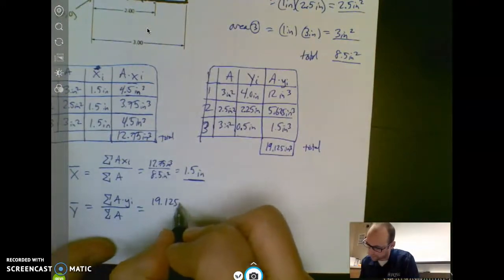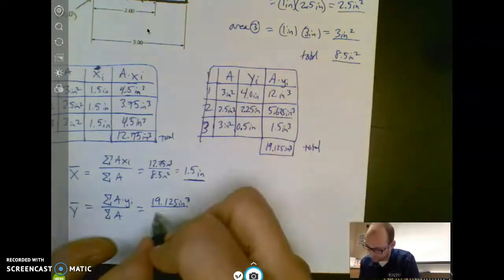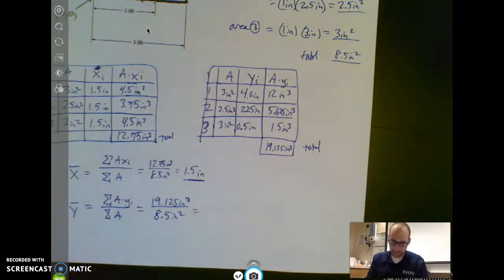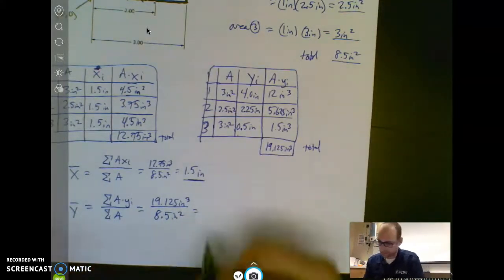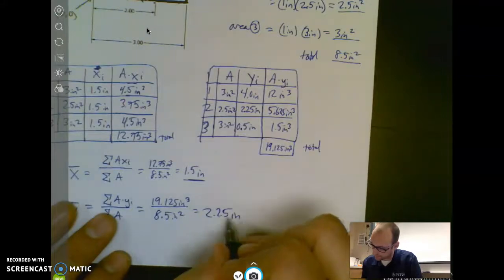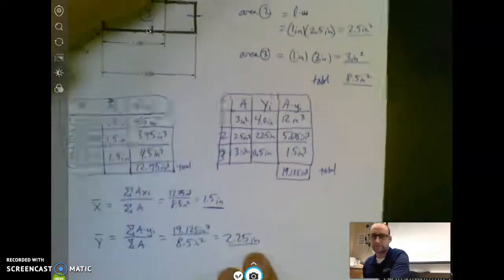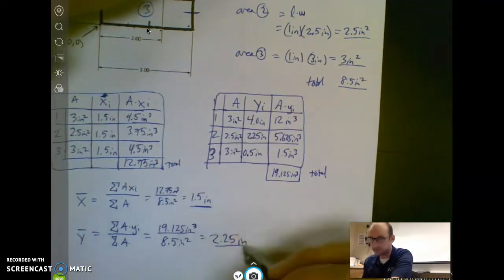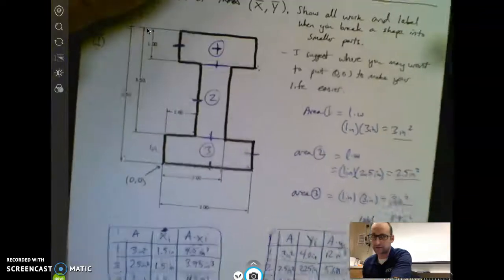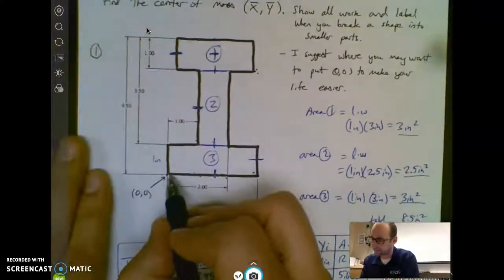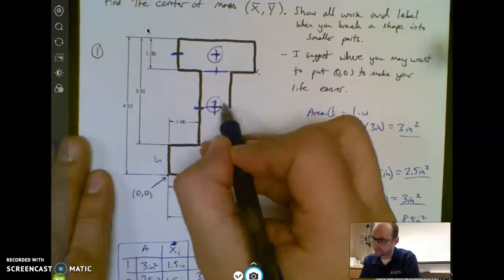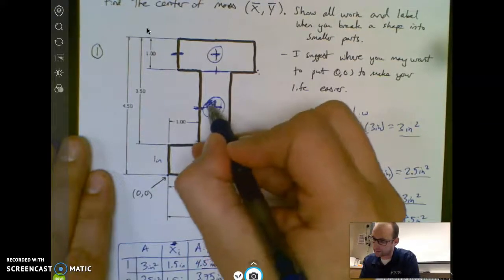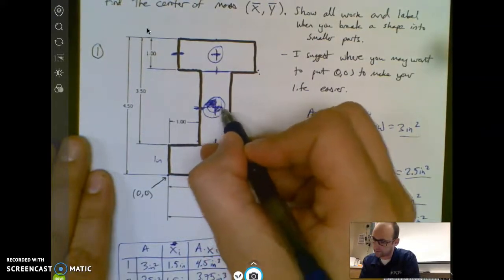19.125 inches cubed over 8.5 inches squared. If I do that division, I get 2.25 inches. So I know my exact middle is 1.5 inches to the right and 2.25 inches up is my center of mass. So 1.5, 2.25, here's my full center of mass. It actually gets this symbol, and it's the full center of mass.